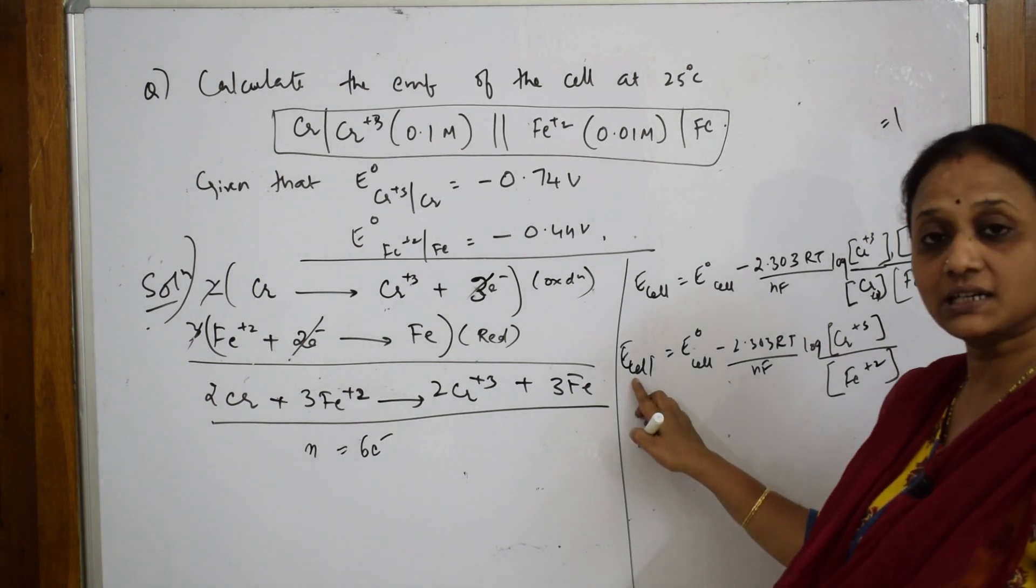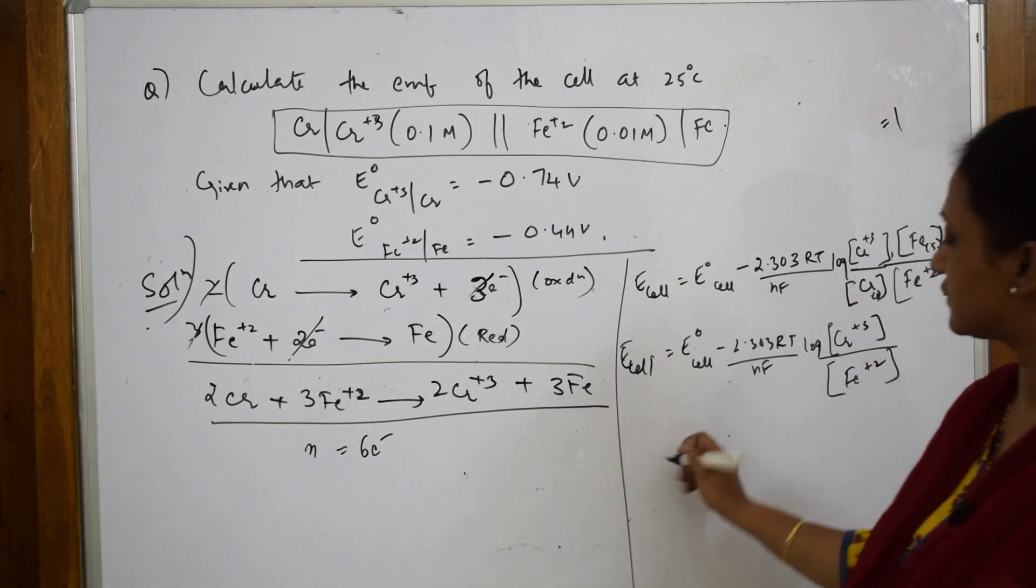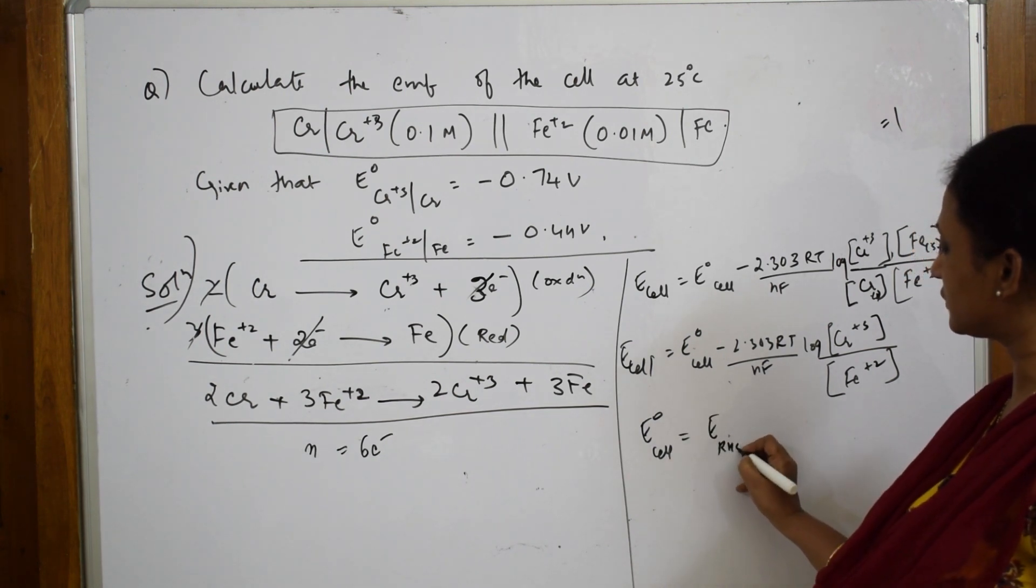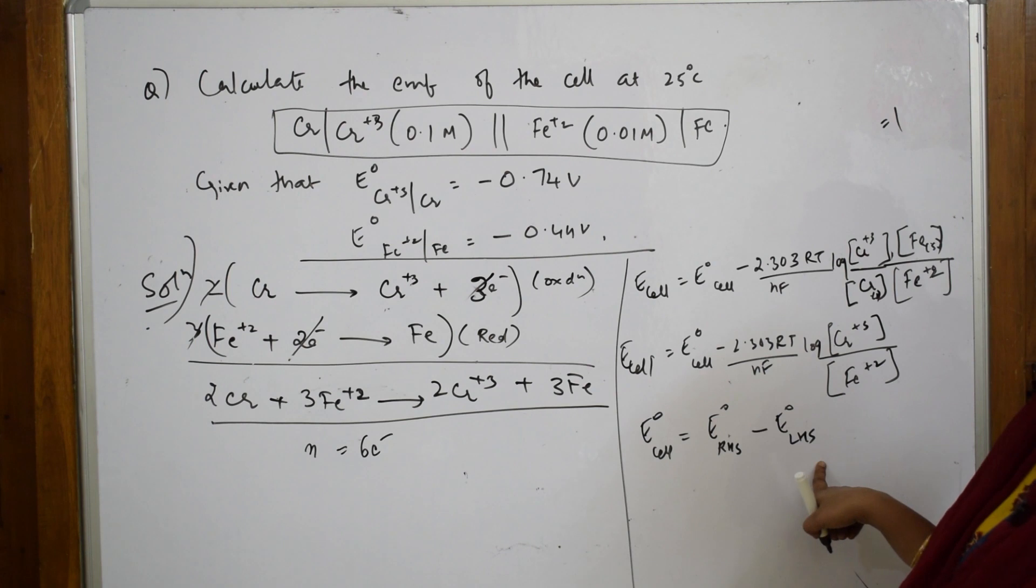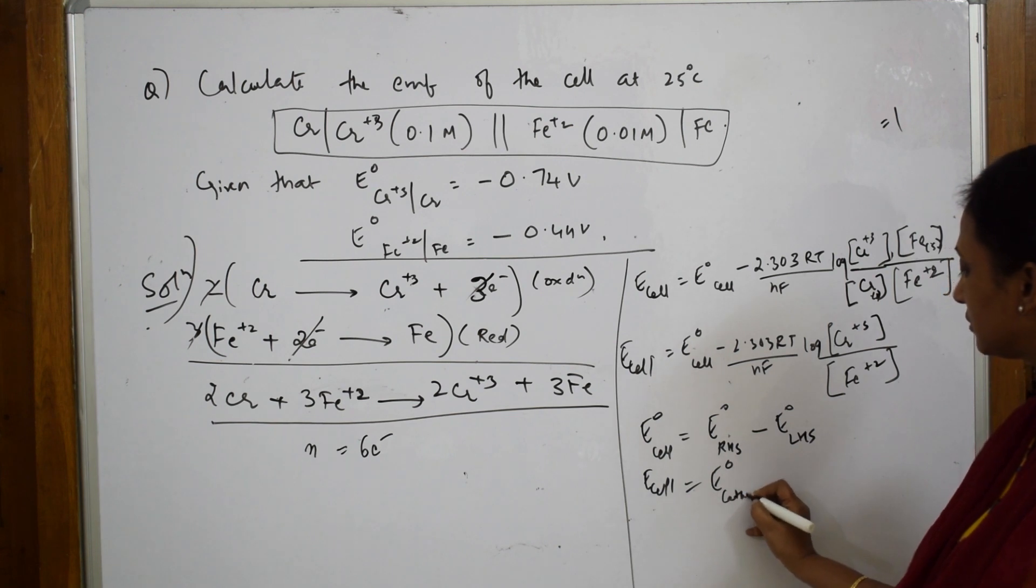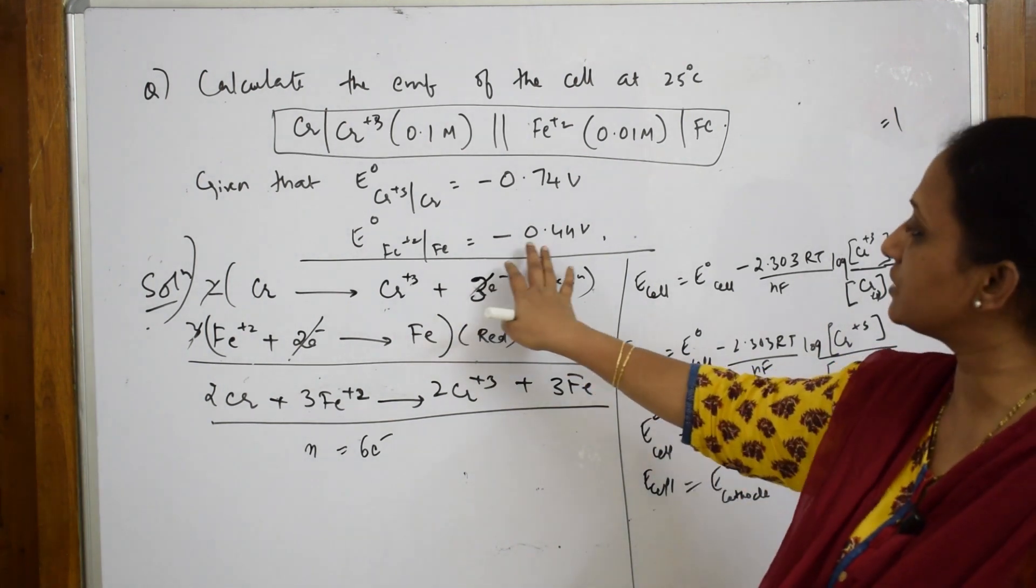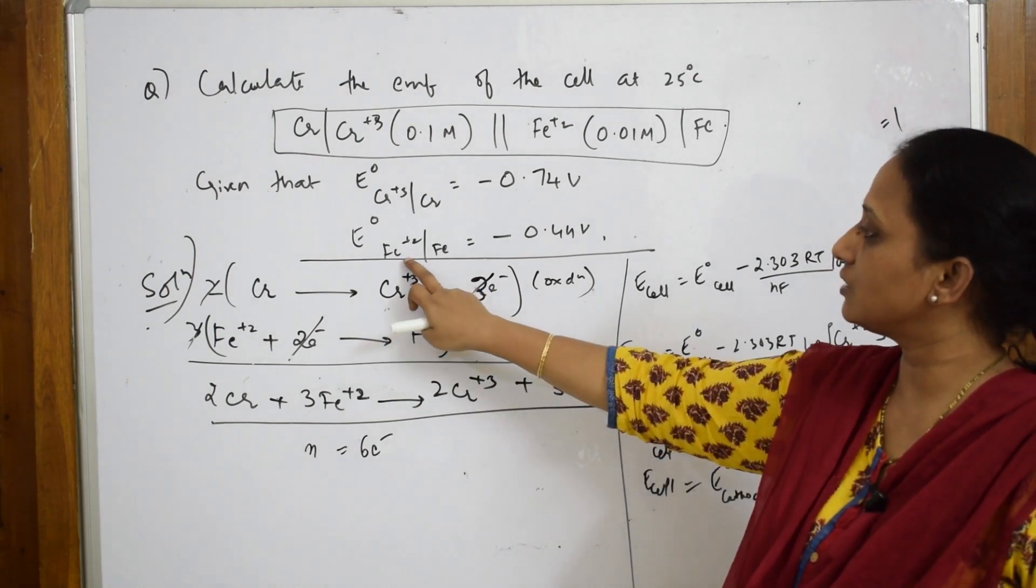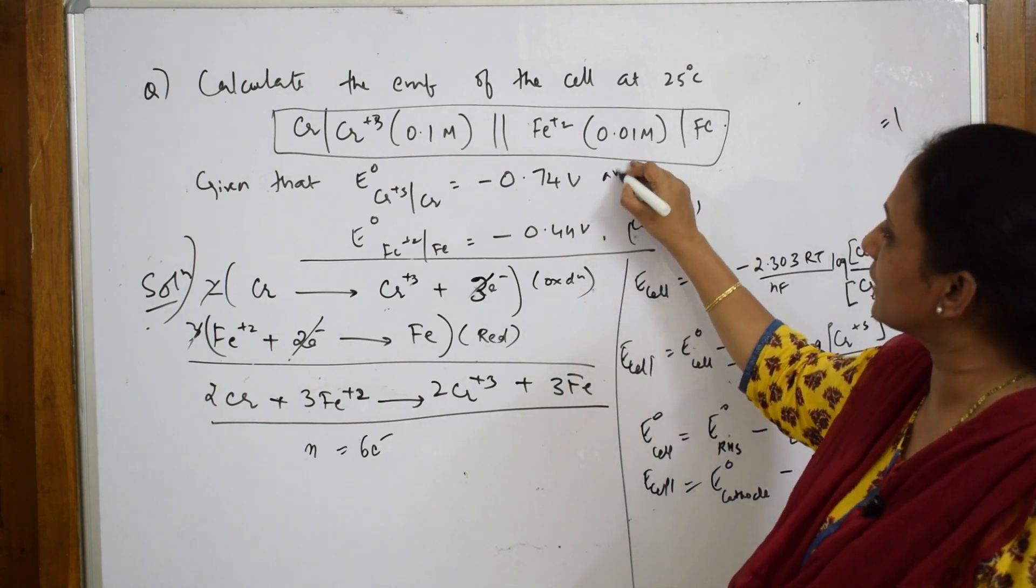Now I need to calculate E°_cell first, then substitute. The formula is E°_cell = E°_cathode - E°_anode. Iron is the cathodic reaction (reduction) and chromium is the anodic reaction (oxidation).